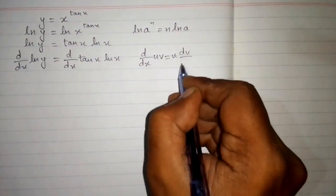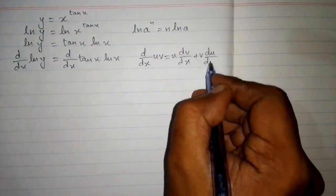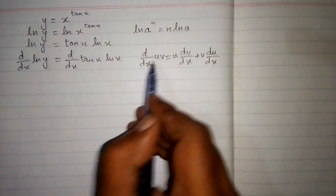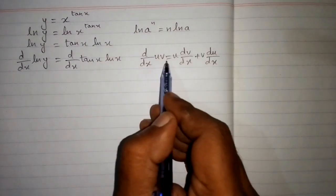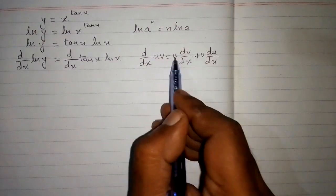Here we have 10x in place of this u and ln x in place of this v, so we will put the values of u and v in this formula.